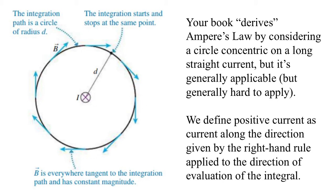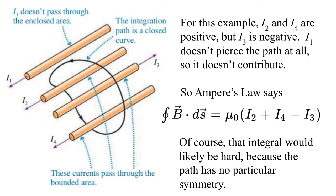Consider a relatively simple case where we take an Amperean loop. We start at some point, do a closed path, and at every point take B dotted into a little bit of the path. This is based on a textbook that derives Ampere's law by considering a long circle concentric on a long straight wire, but it's generally applicable — and also generally hard to apply.